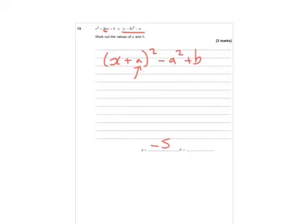And then we know that this part here, minus a squared, so that's minus 25 plus b, has got to equal minus a, which equals minus minus 5.